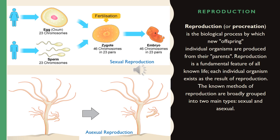Reproduction, or procreation, is the biological process by which new offspring individual organisms are produced from their parents. Reproduction is a fundamental feature of all known life — each individual organism exists as the result of reproduction. The known methods of reproduction are broadly grouped into two main types: sexual and asexual.